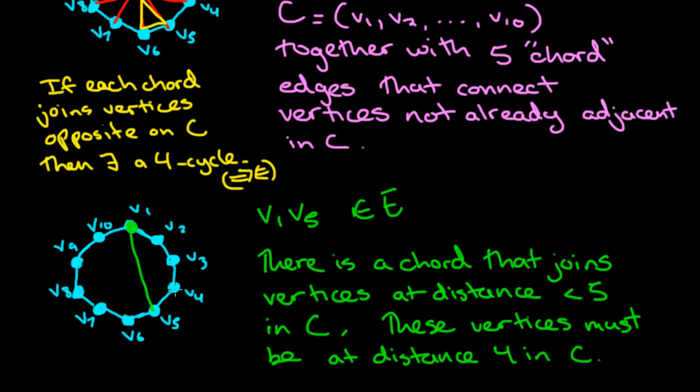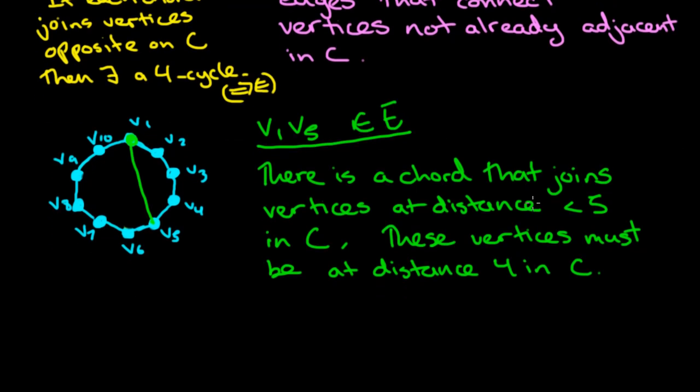So since we know that there's a chord between a pair of vertices at distance 4, we can say without loss of generality that that is this particular chord from V1 to V5. So let's just put that. This means without loss of generality, we will say that V1, V5 is that chord which connects vertices at distance 4 in C.